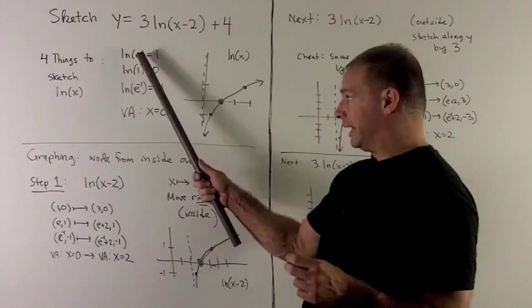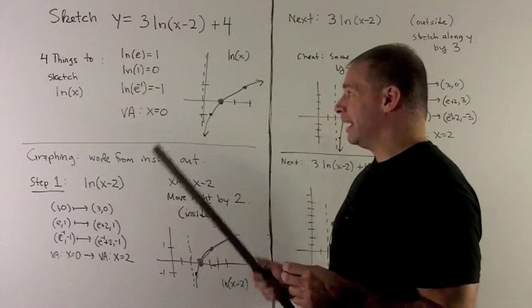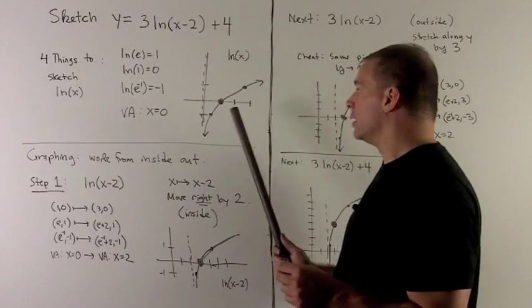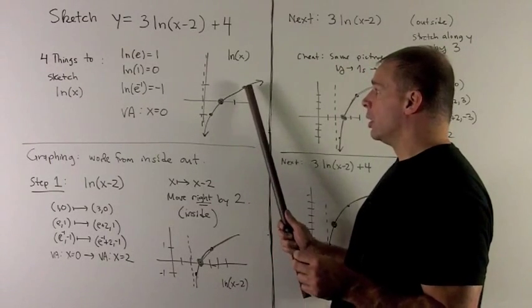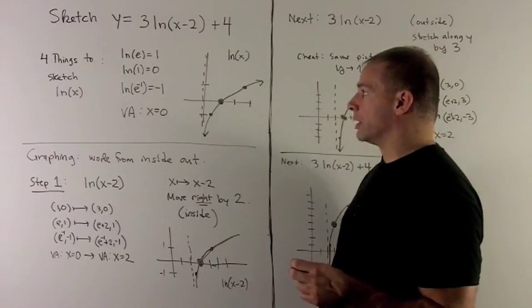So first, we have the point e comma 1 on the graph. E is about 2.7. So if I go out 1, 2, and then roughly 0.7, we go up 1. That's one of our points.